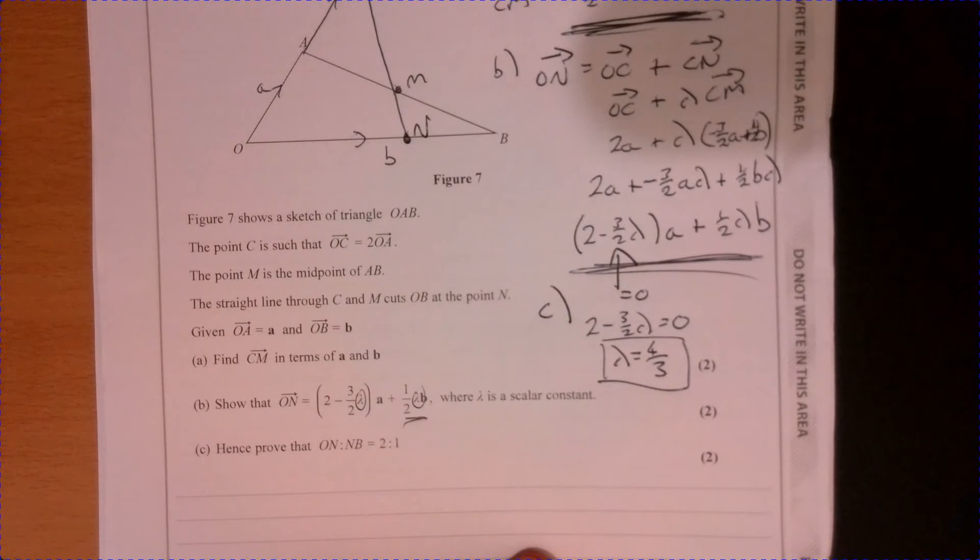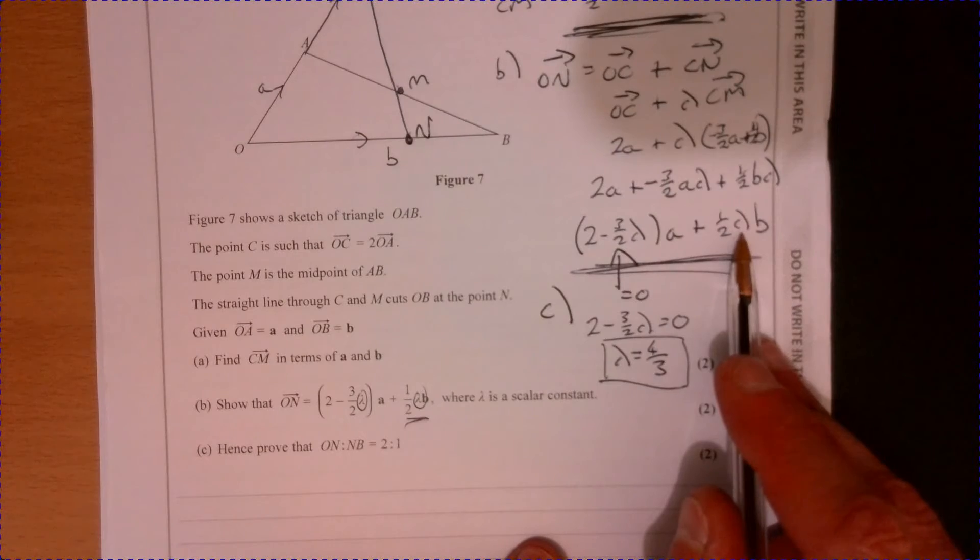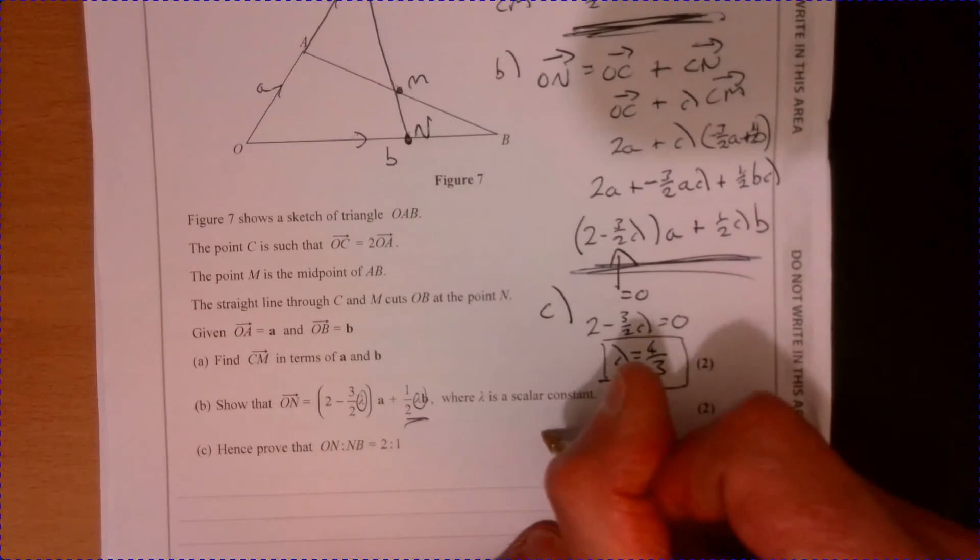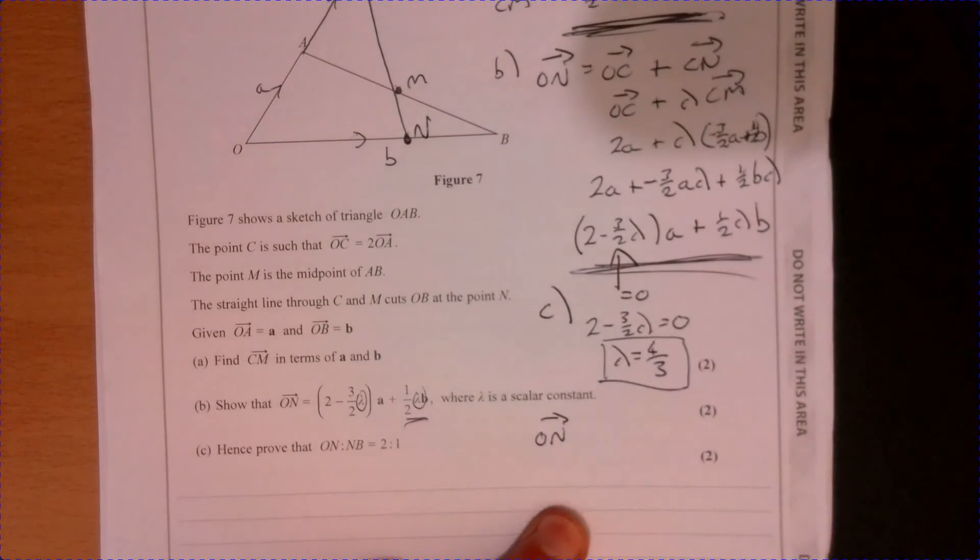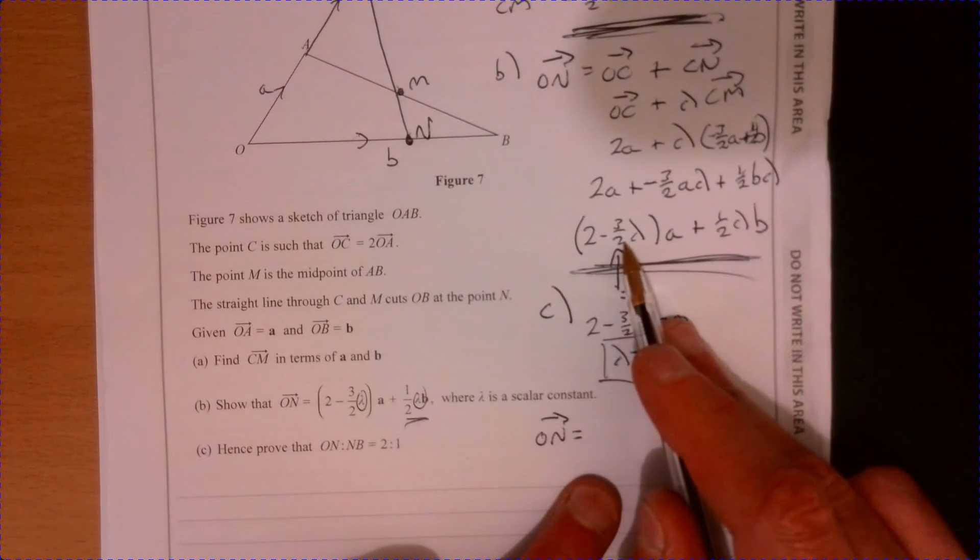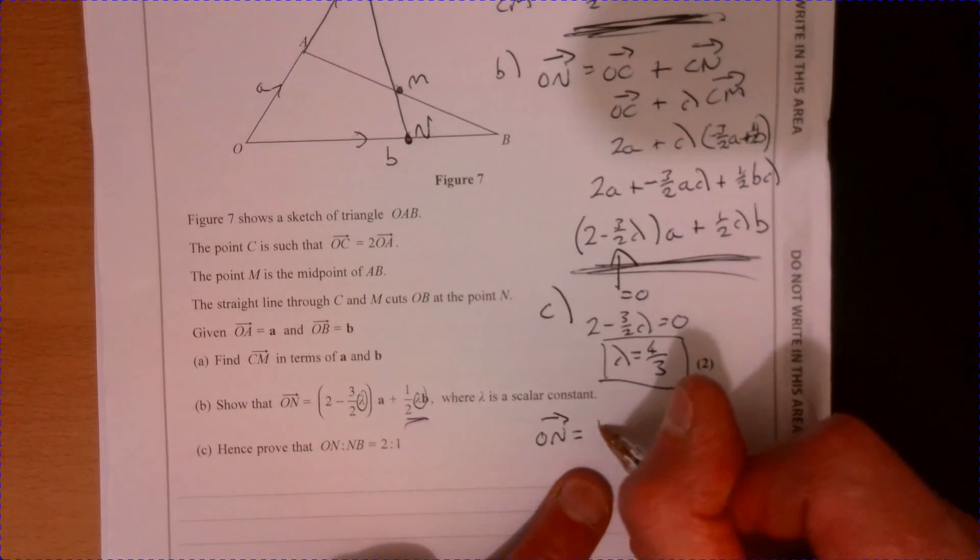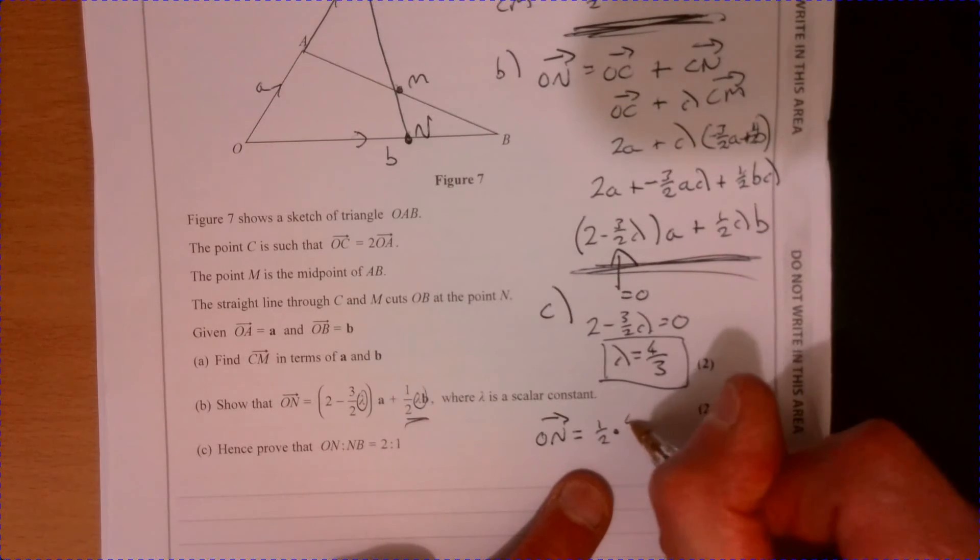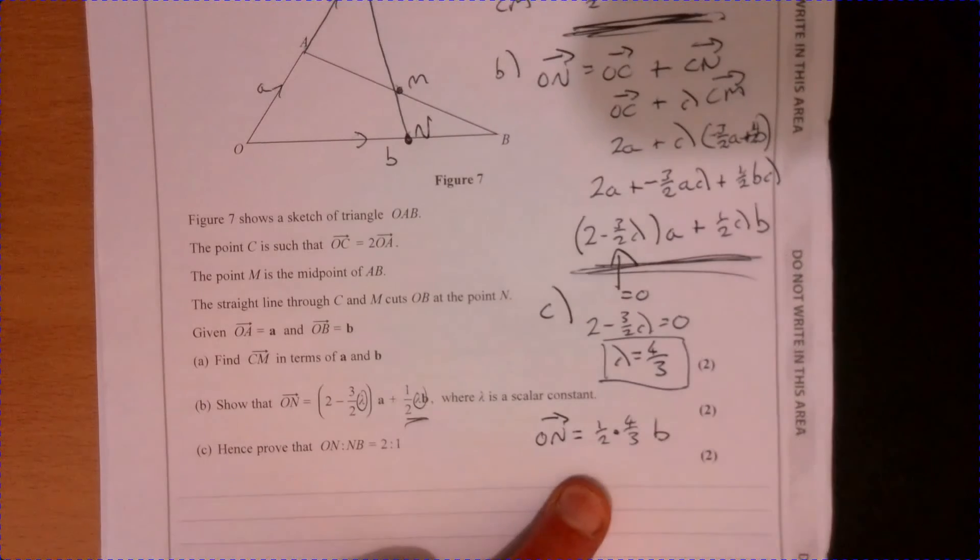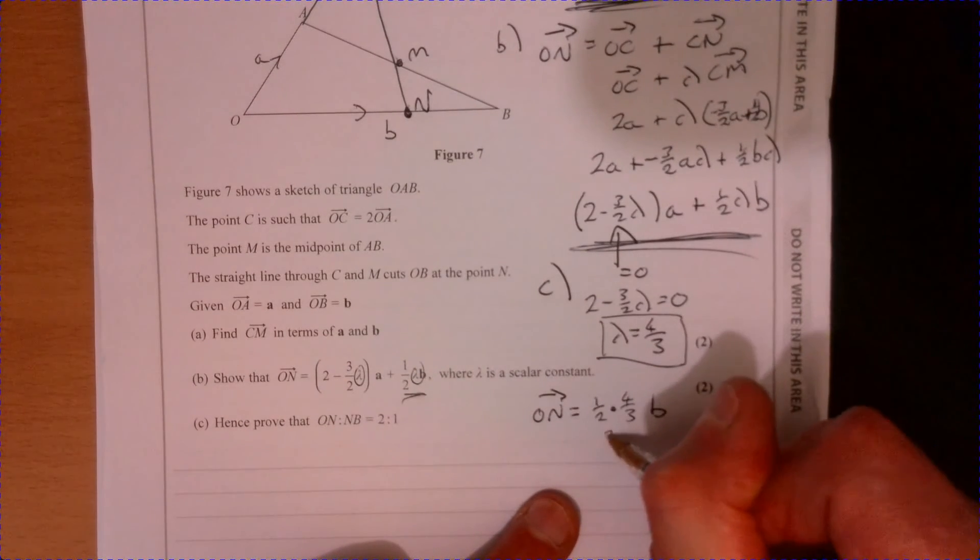That's given us lambda to be four over three. So now if we just substitute that into here, we can find out what ON is. So ON is going to be equal to, I know this is just worked out to be zero, so it's going to be a half times four over three b. So that's going to be four over six, so that's two thirds.